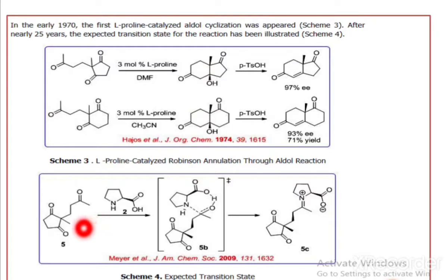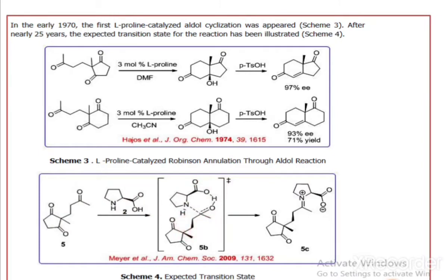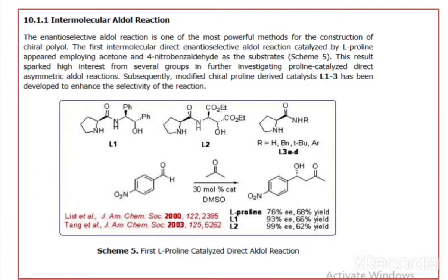The expected transition states are involved in these reactions. Now, turning to the intermolecular aldol reaction: the enantioselective aldol reaction is one of the most powerful methods for the construction of chiral polyols.